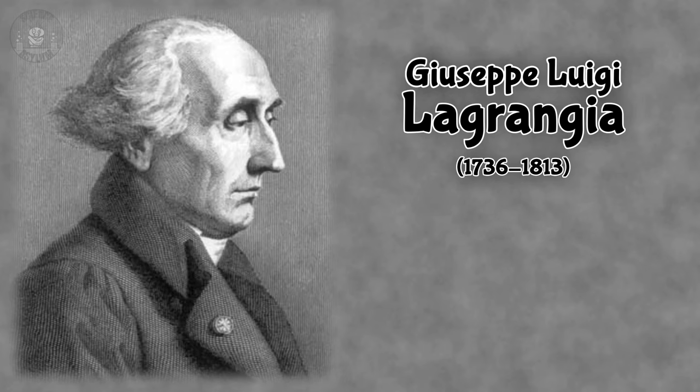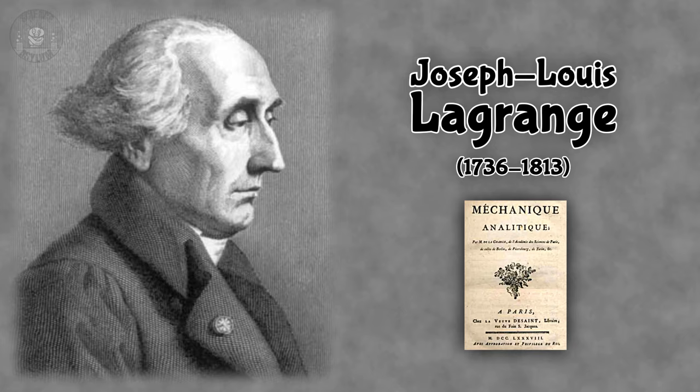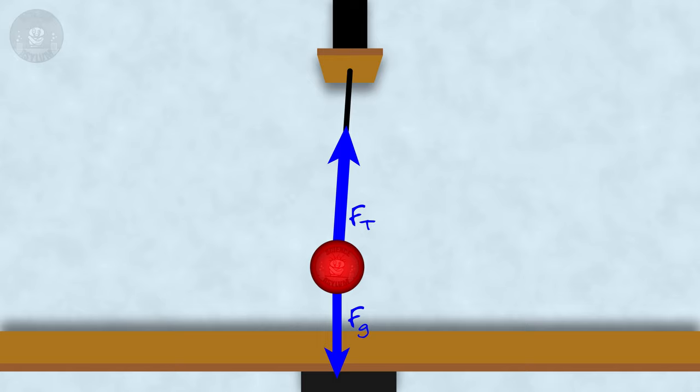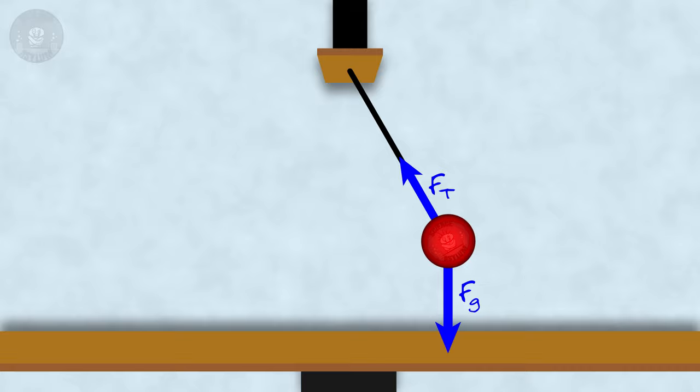Enter Lagrangian mechanics, named after Joseph Louis Lagrange, who published them in 1788. In Newton's laws, if you know where a pendulum is and what it's doing, then the forces tell you what happens next — a cause leads to an effect. But Lagrange thought to himself: what if we could consider the entire path at once?